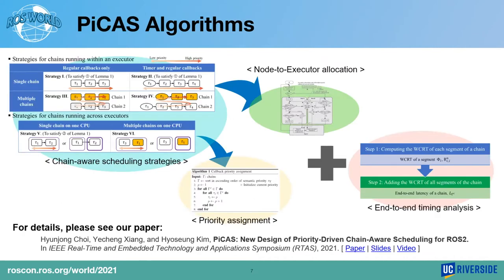PICAS is redesigned from ROS2 default scheduling to resolve the problems mentioned earlier, and it has two goals. First, critical chains execute first to avoid fairness-based scheduling. Second, considering a single chain, a chain instance should be scheduled in arrival order to prevent self-interference. To achieve these goals, we proposed six callback scheduling strategies within and across executors, realized by PICAS callback priority assignment scheme and a chain-aware node allocation algorithm. PICAS is also equipped with an end-to-end latency analysis tool. For more detail on each component, please check out our published paper.